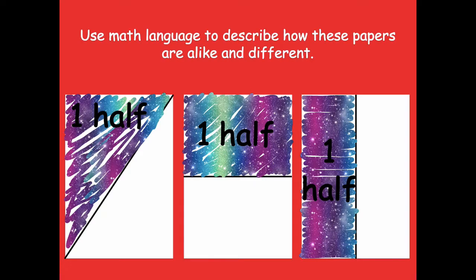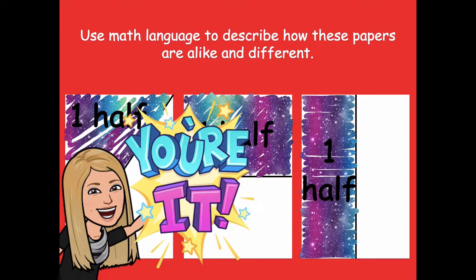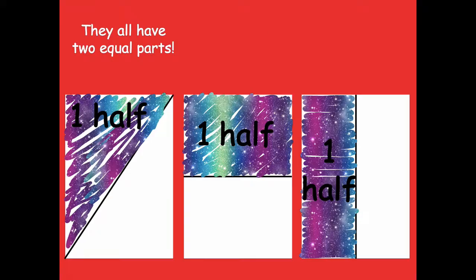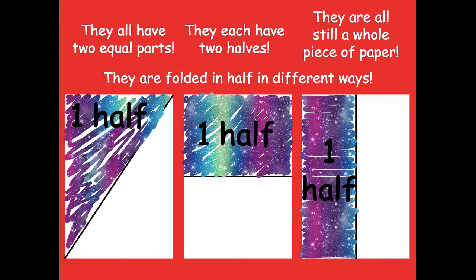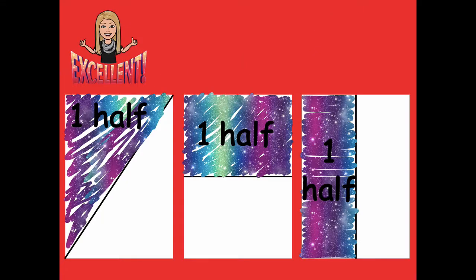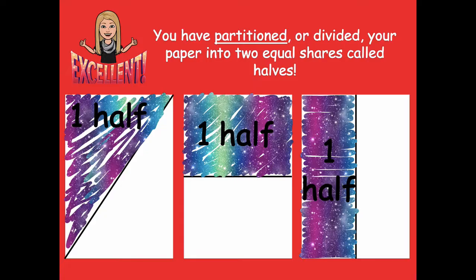Let's use math language to describe how these papers are alike and different. They all have two equal parts, right? They each have two halves, and they're also a whole piece of paper — but they're folded in half in different ways. So you have partitioned, or divided, your paper into shares called halves — two equal shares called halves. It just means we're dividing it, breaking it apart. These are all examples of two equal shares called halves.